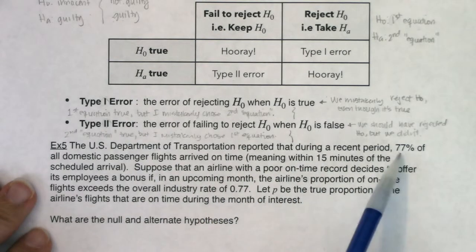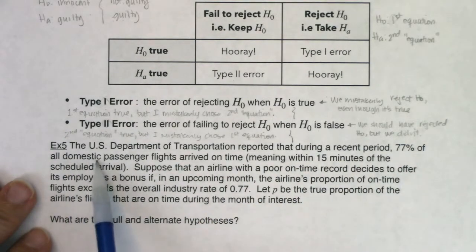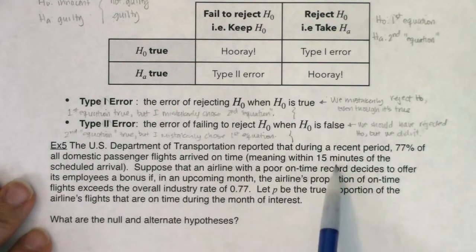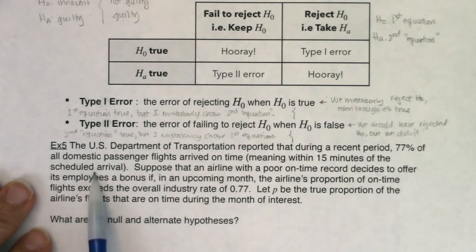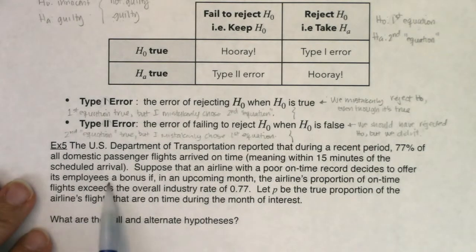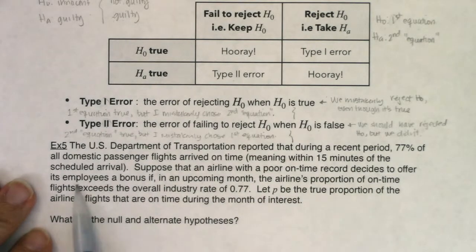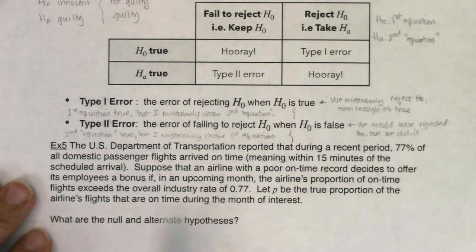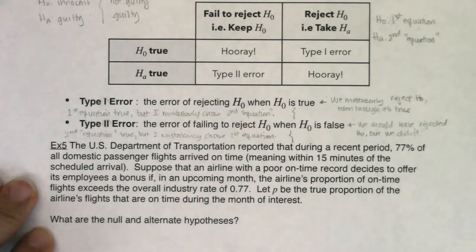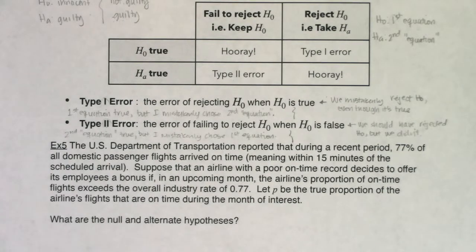An airline with a poor on-time record decides to offer its employees a bonus if in an upcoming month the airline's proportion of on-time flights exceeds the overall industry rate of 0.77. Let p be the true proportion of the airline's flights that are on time during the month of interest. Before we do anything, let's figure out what land we're in.